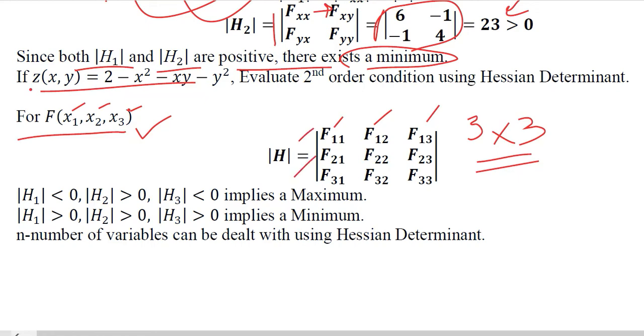And again the criterion will be the same - if there are alternative signs then there will be a maximum, and with positive signs there will be a minimum.